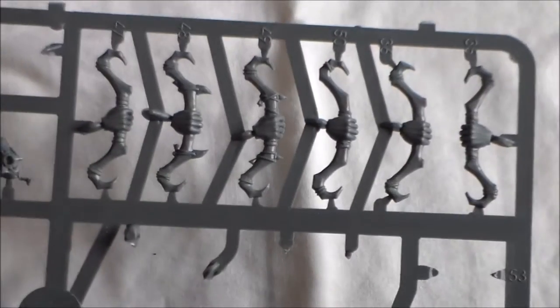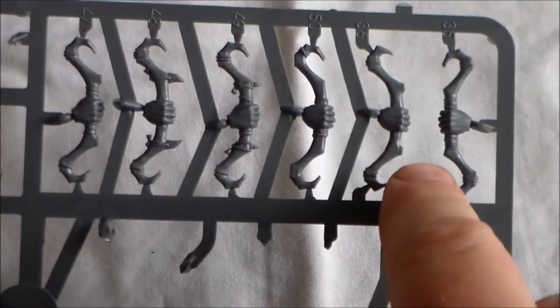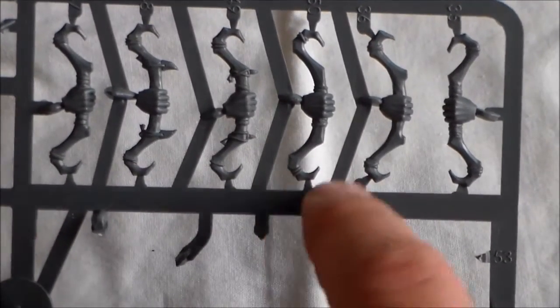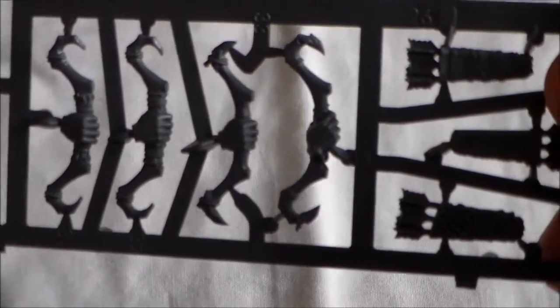Second one, this one's kind of cool. You get a lot of bows. I think the orc bows look really cool. I like the design of them. They're really nice and you get 10 of them on this sprue. There's six here, there's six on the other side.